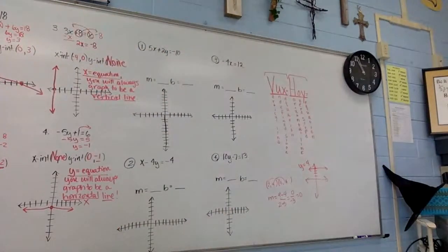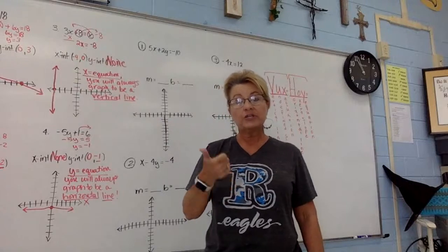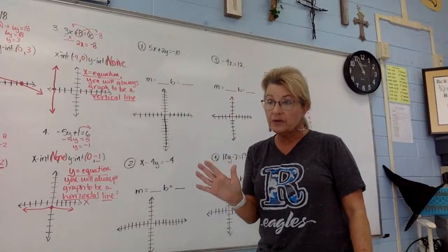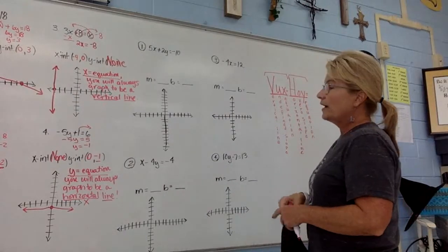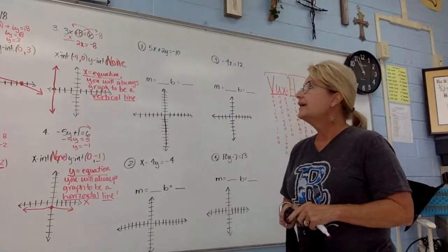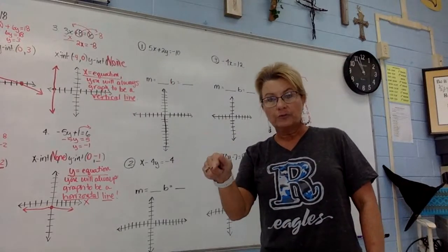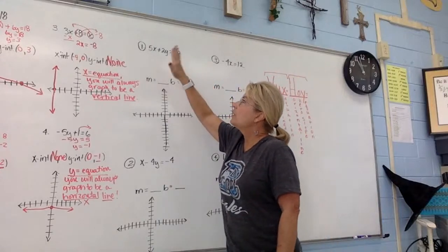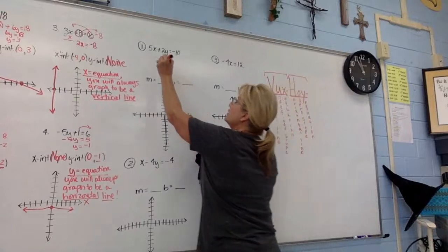Now let's move to the next method: graphing using slope-intercept form. This is probably the more popular way. Slope-intercept form looks like y = mx + b. Take the equation and solve until y is by itself. That usually takes two steps: first move the x term across, then divide to eliminate the coefficient on y.